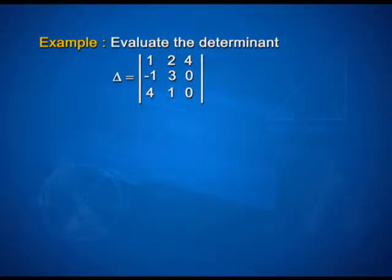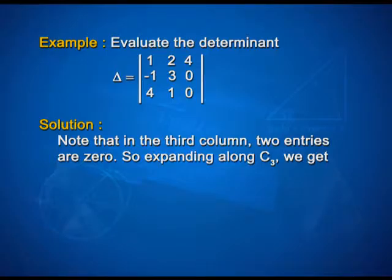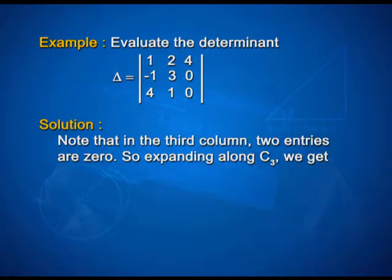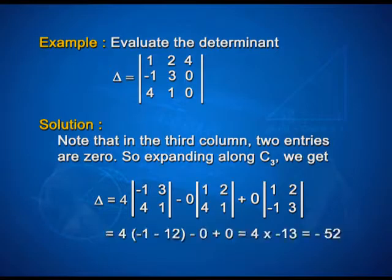Students, look at the screen for an example. Evaluate the determinant [1, 2, 4; -1, 3, 0; 4, 1, 0]. Note that in the third column, two entries are 0. So, expanding along C3, we get: 4*det[-1, 3; 4, 1] minus 0 + 0. This simplifies to 4*(-1 - 12) = 4*(-13) = -52.